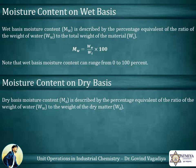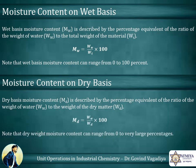Dry basis moisture content, MD, is described by the percentage equivalent of the ratio of the weight of water, WW, to the weight of the dry matter, WD. The equation of moisture content by dry basis is: weight of water divided by weight of dry material, multiplied by 100.